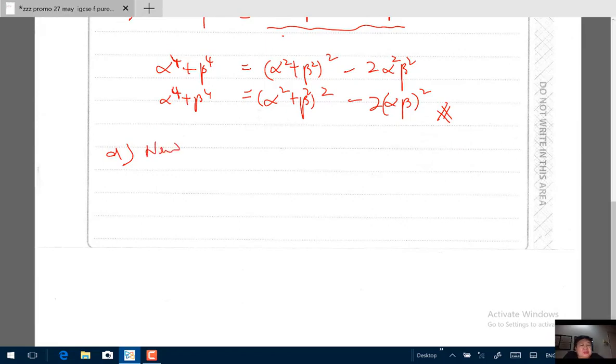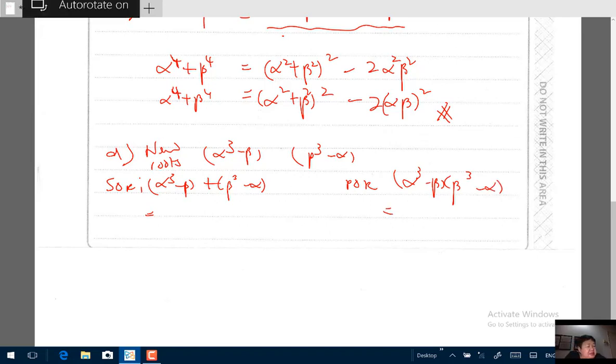So you will have new roots which are α³ - β and β³ - α. You find the sum of roots, which is α³ - β + β³ - α, and you also find the product of roots, which is (α³ - β)(β³ - α). The sum of roots here, when you expand, you have α³ + β³ - α - β, which is the same as α³ + β³ minus the original sum of roots.